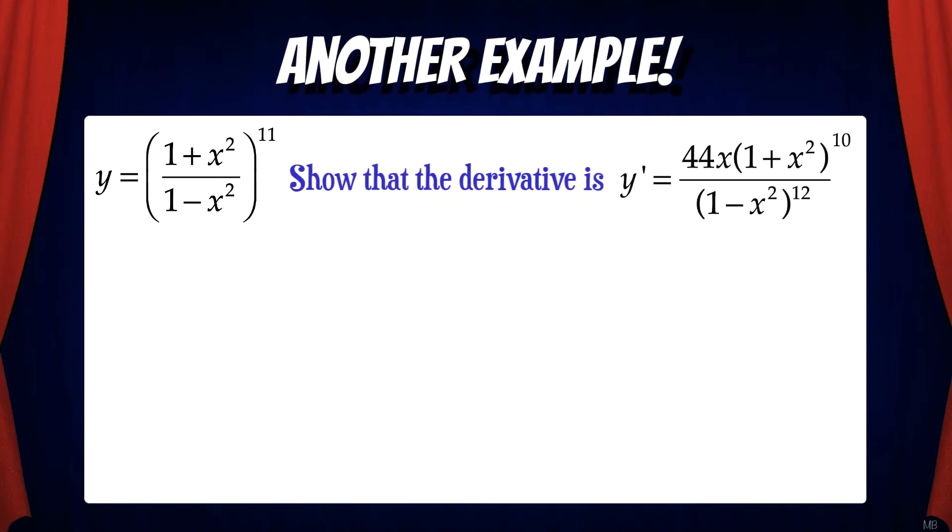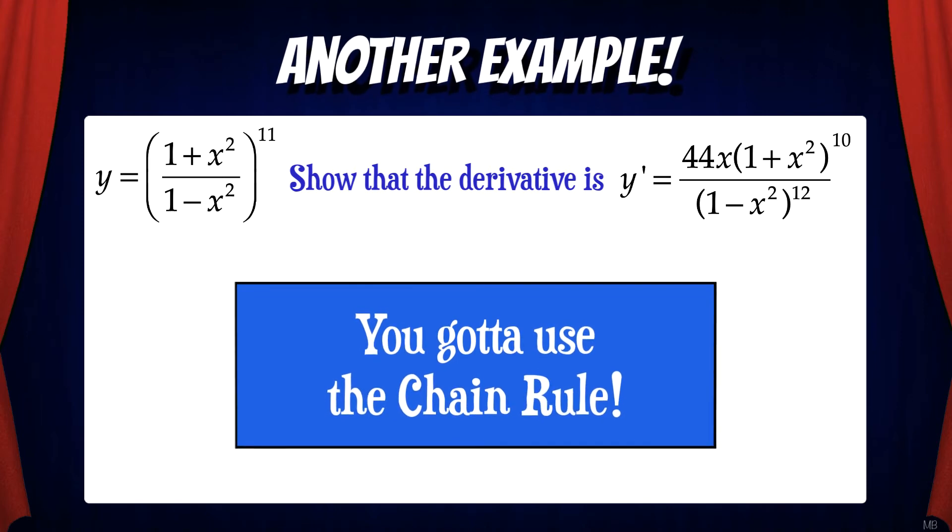Show that the derivative of this function is 44x times the quantity of 1 plus x squared to the 10th power all over the quantity of 1 minus x squared to the 12th power. The first thing to notice here is that we have an outside and an inside function. This means we need to use the chain rule.